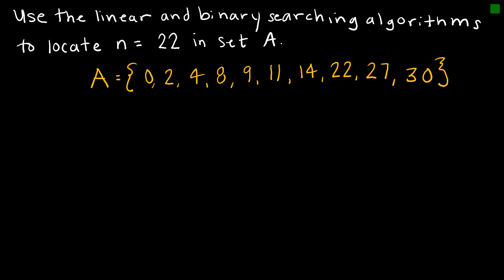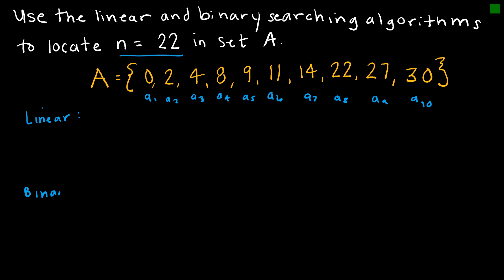Here's a practice problem: we're looking for the value 22 in a set that is already in the correct order. I'll label them a sub one, a sub two, a sub three, a sub four, and so on. Using the linear search algorithm, I check: is it in a sub one? No. A sub two? No. A sub three? No. A sub four? No — continuing all the way until I reach a sub eight. It is in a sub eight, so my output is 8. All I was doing was going from left to right.